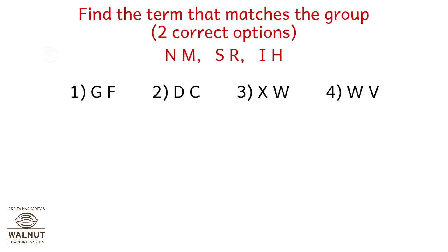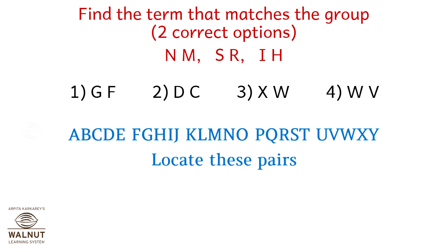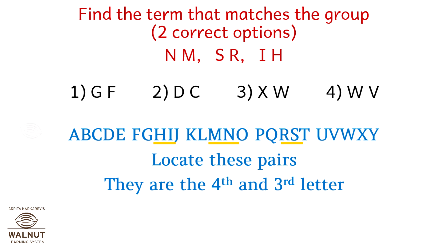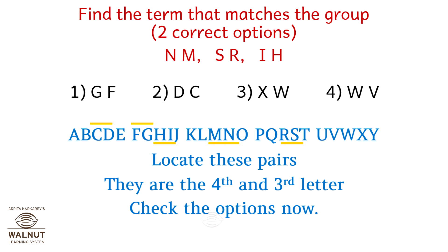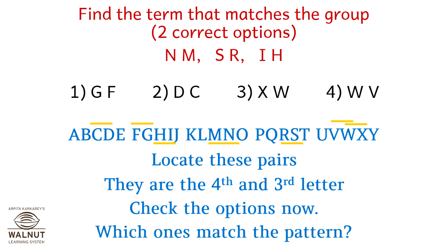Find the term that matches the group: N, M, S, R, I, H. There are two correct options. The series is given below. Locate these pairs: N, M, S, R, and I, H — they are the 4th and 3rd consecutive letters. Check the options: GF, CD, XW, and WV. Which ones match the pattern? It's DC and XW.